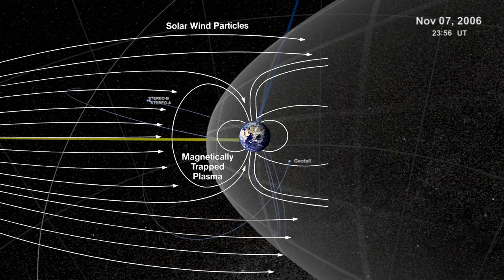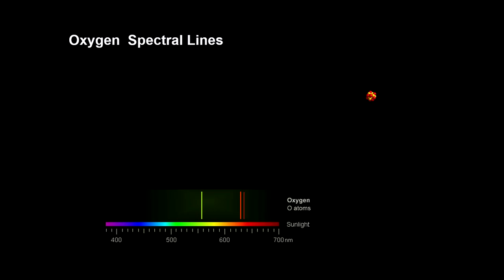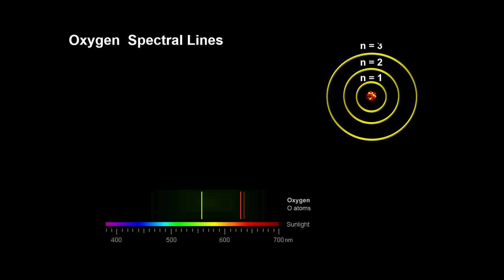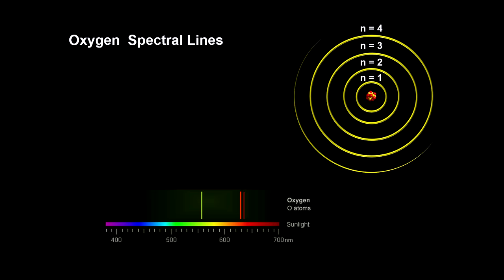I'll take a minute to explain this, because it's relevant for understanding how a star's light can tell us how far away the star is. Thanks to the work of Niels Bohr, a Danish physicist, we discovered that electrons attached to atoms occupy quantized discrete energy levels called shells.